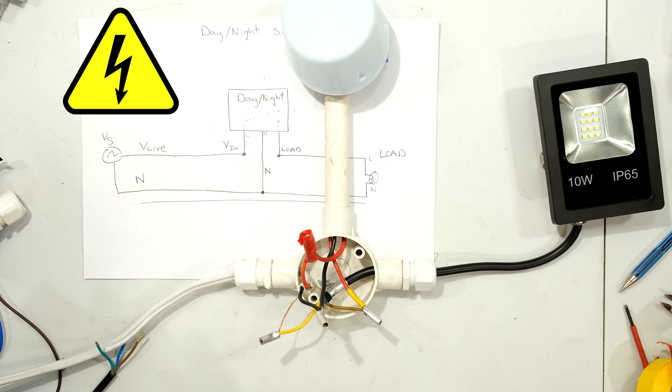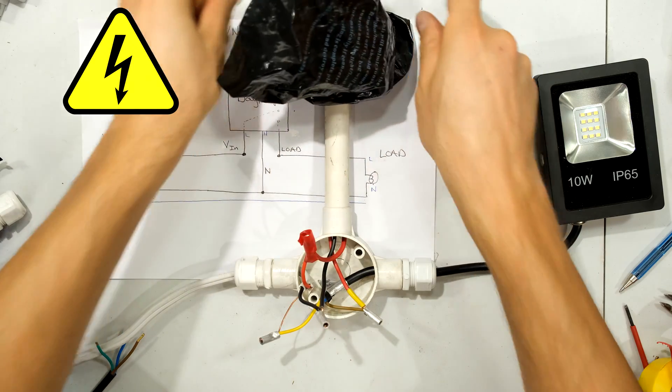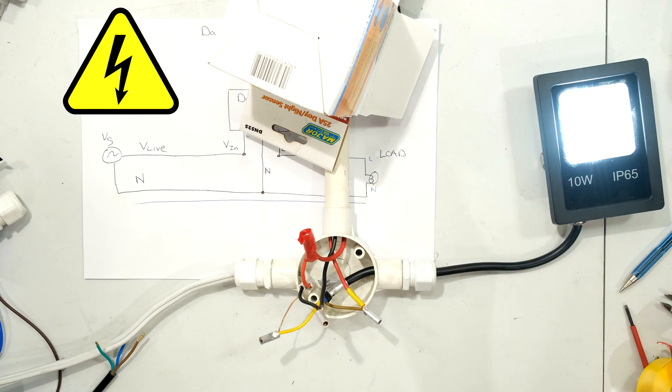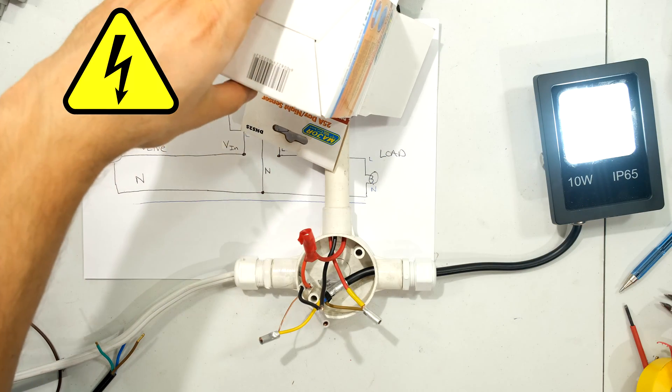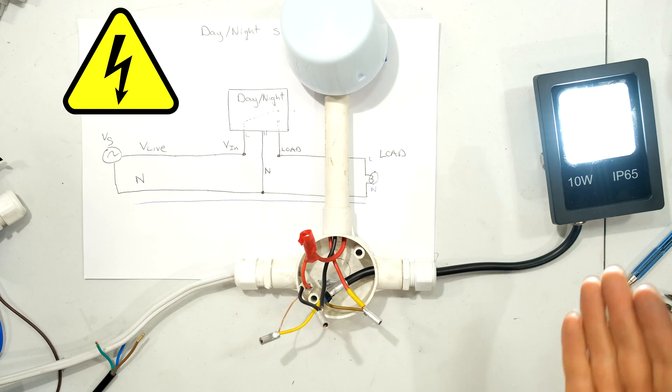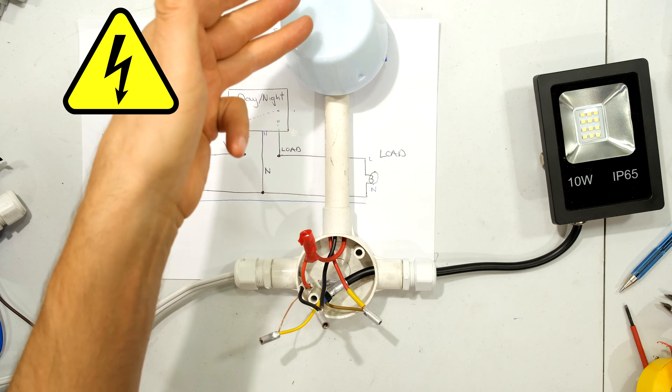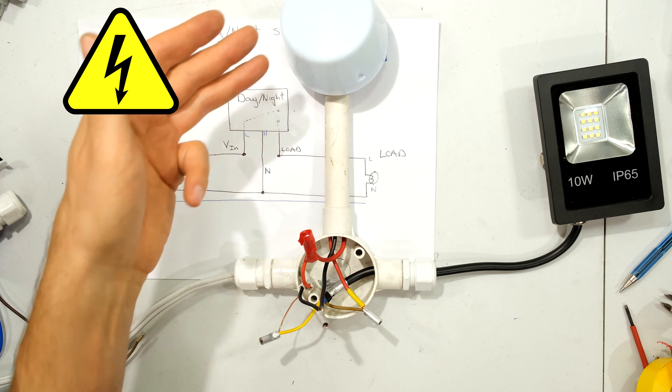So I'm turning on the supply and just to show that it is working, I'm going to put this little black bag over the day-night sensor. Notice the light comes on immediately and in the daytime, the light will go off.